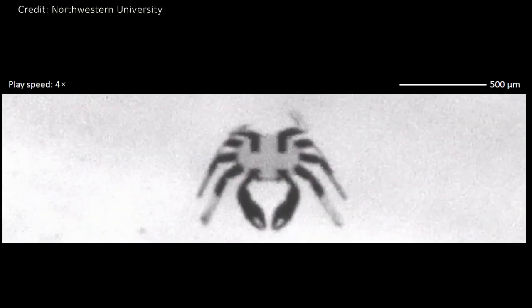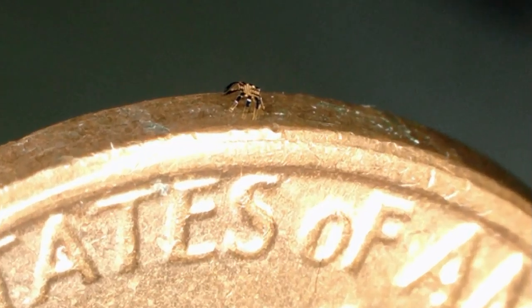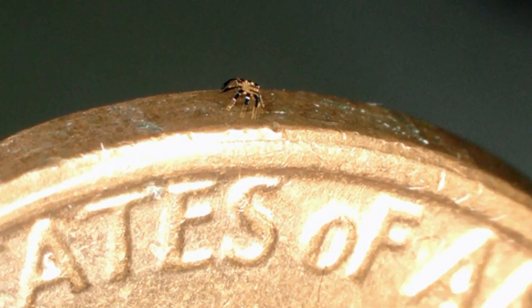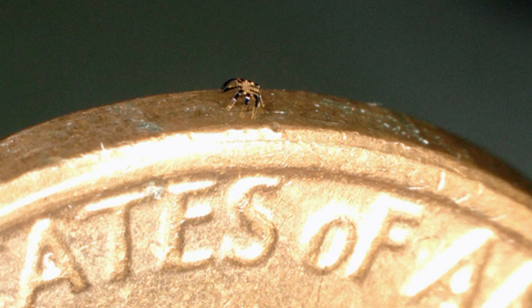Northwestern University engineers have developed the smallest ever remote-controlled walking robot, and it comes in the form of a tiny, adorable peapod crab. Just a half-millimeter wide, the tiny crabs can bend, twist, crawl, walk, turn, and even jump.